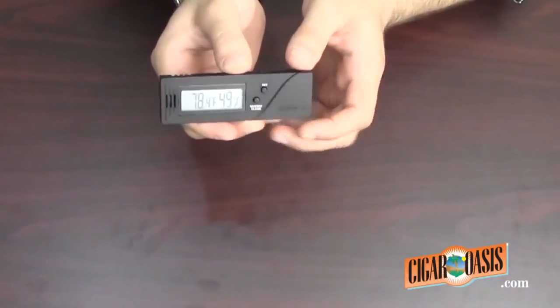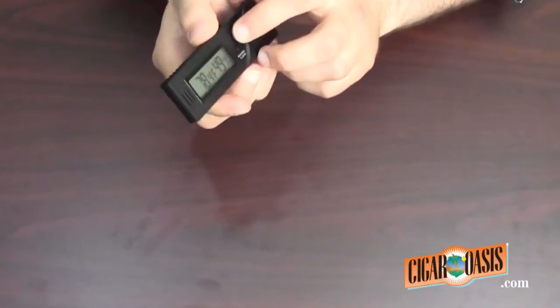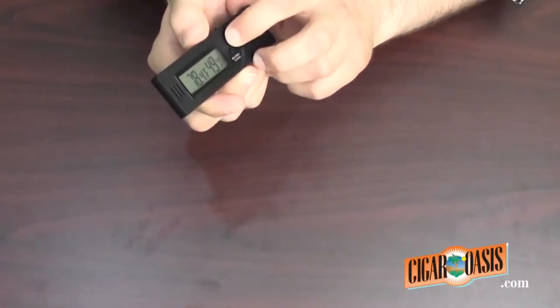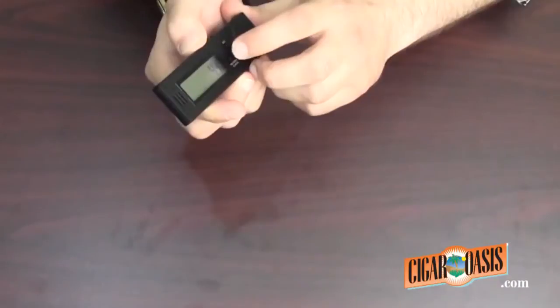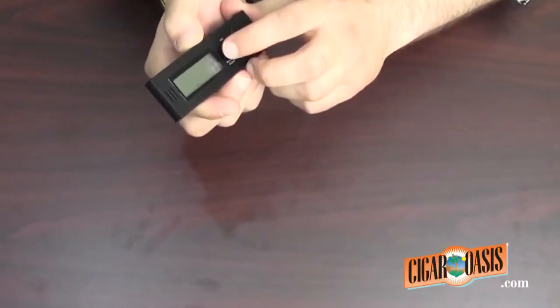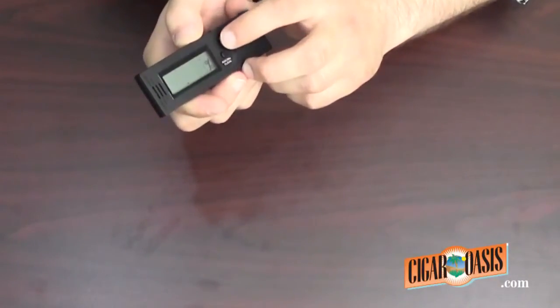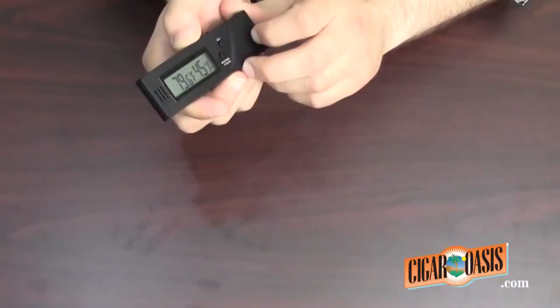And the same if you're going minus, you'll hold down on the Set button and go until you see the minus, minus 3. And set to save.